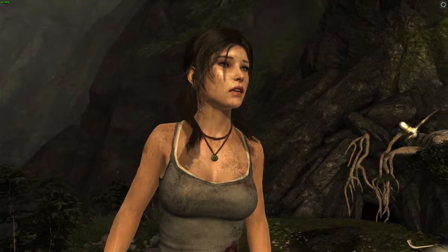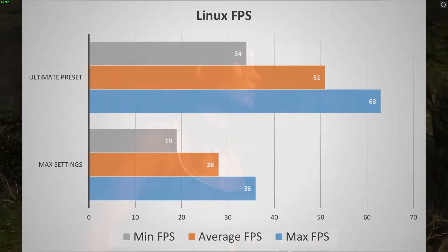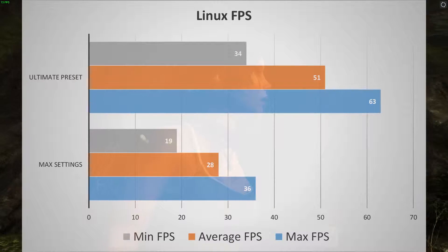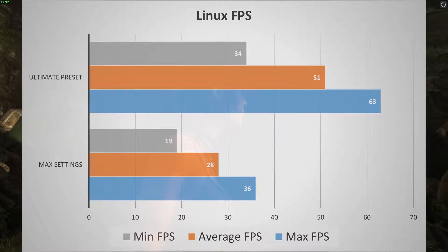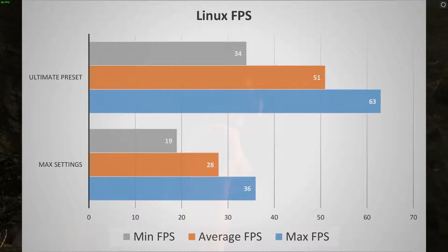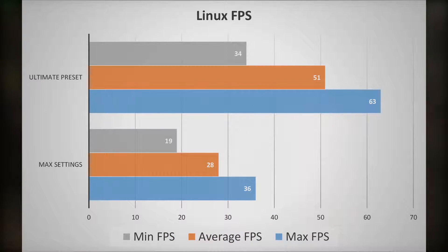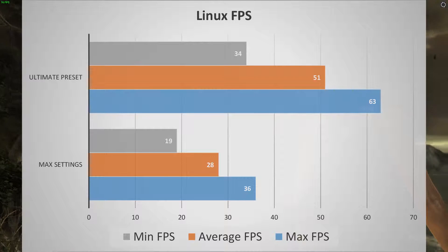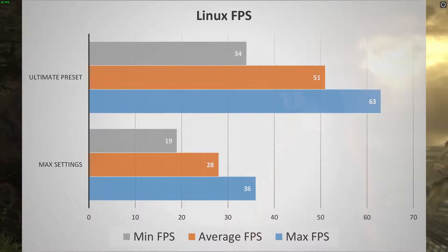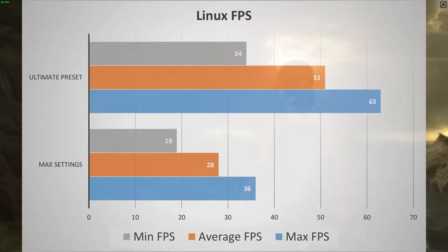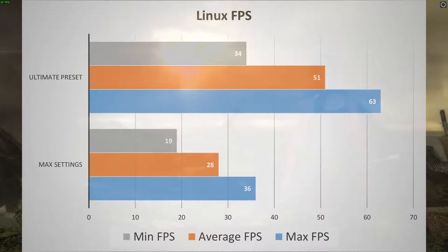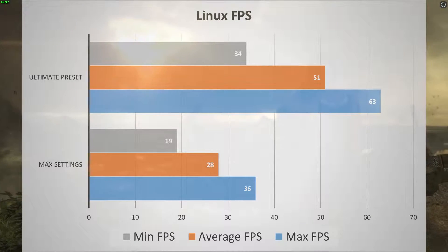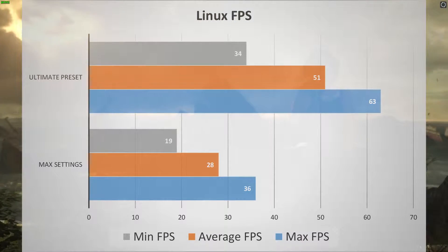Let's get into the benchmark results. In the background you'll see the benchmark running, and in the foreground we'll discuss the average, maximum, and minimum FPS numbers that were achieved. I did this benchmark for the ultimate preset and also for the max settings, which means we pushed every slider to the far right. This especially meant going from FXAA in the ultimate preset to the 4x super sample anti-aliasing setting in the maximum settings.